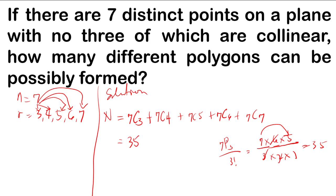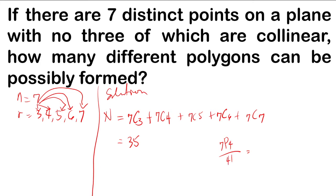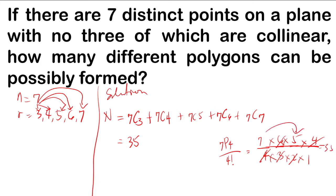For C(7,4): P(7,4) over 4 factorial is 7 times 6 times 5 times 4 over 4 times 3 times 2 times 1. Cancel 4, then 3 times 2 is 6, cancel with 6. So 7 times 5 is 35. C(7,4) is also 35.